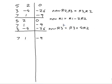Row 1: 5 - 2×7 = -9, 2 - 2×1 = 0, 0 - 2×(-9) = +18. Row 3: 3 + 4×7 = 31, -4 + 4×1 = 0, -26 + 4×(-9) = -62. So I've got my second column of the identity exactly where I want it.